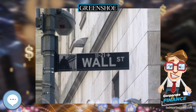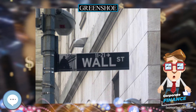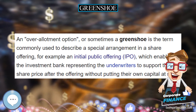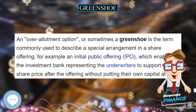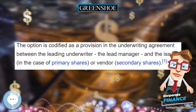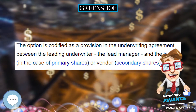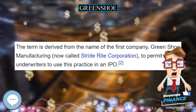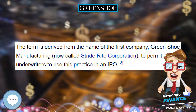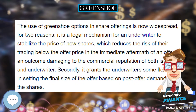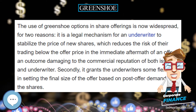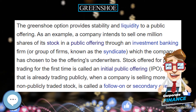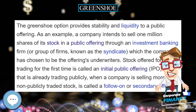A green shoe, formerly known as an over-allotment option, is the term commonly used to describe a special arrangement in a share offering — for example, an initial public offering (IPO) — which enables the investment bank representing the underwriters to support the share price after the offering without putting their own capital at risk. The option is codified as a provision in the underwriting agreement between the lead manager and the issuer.